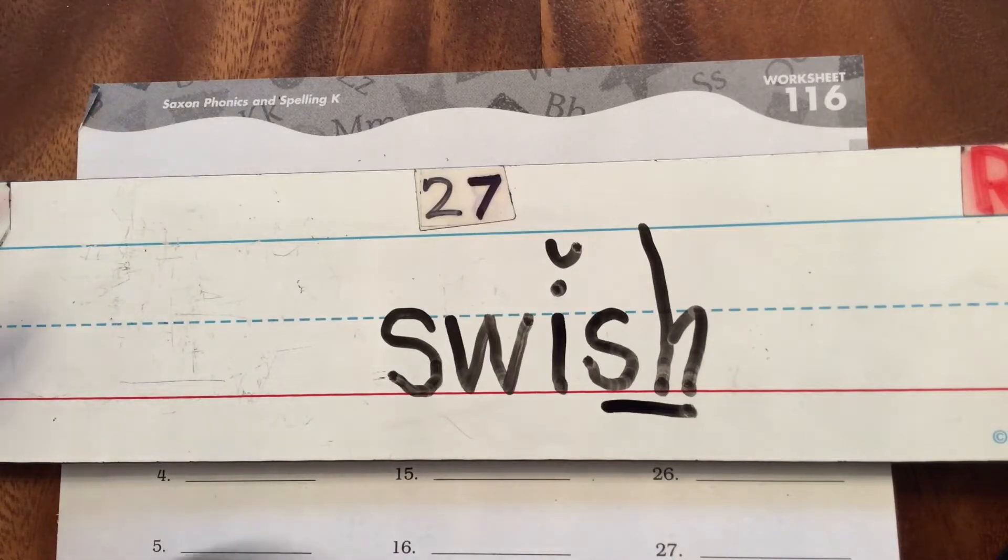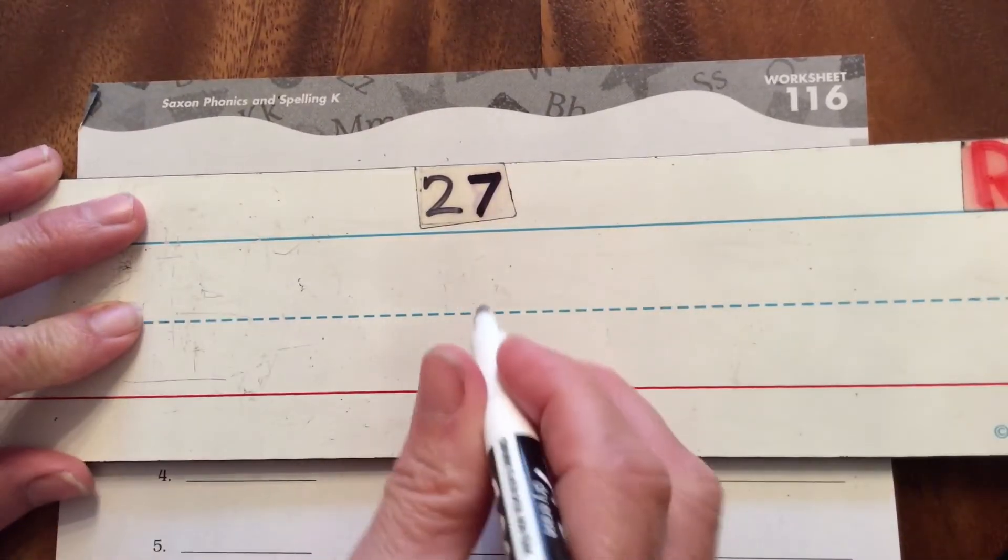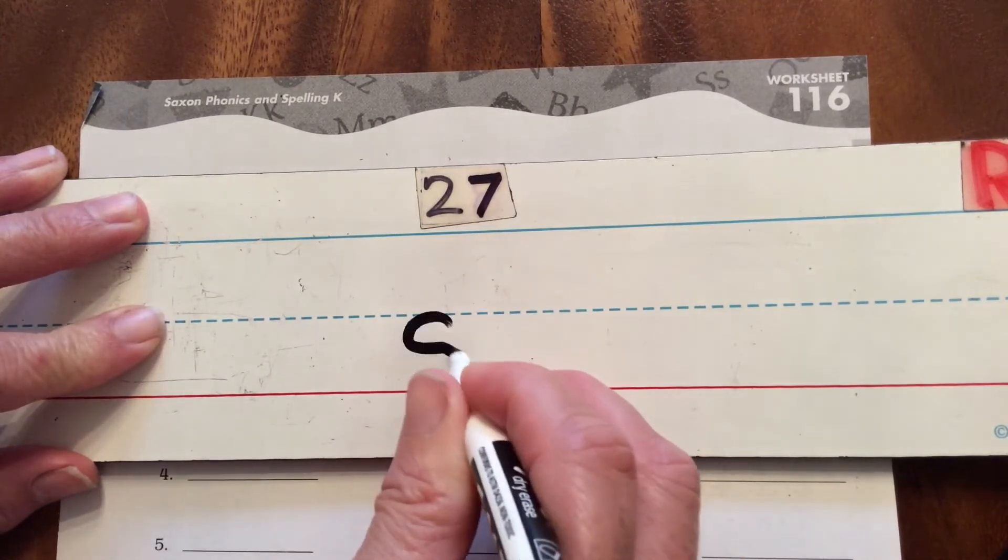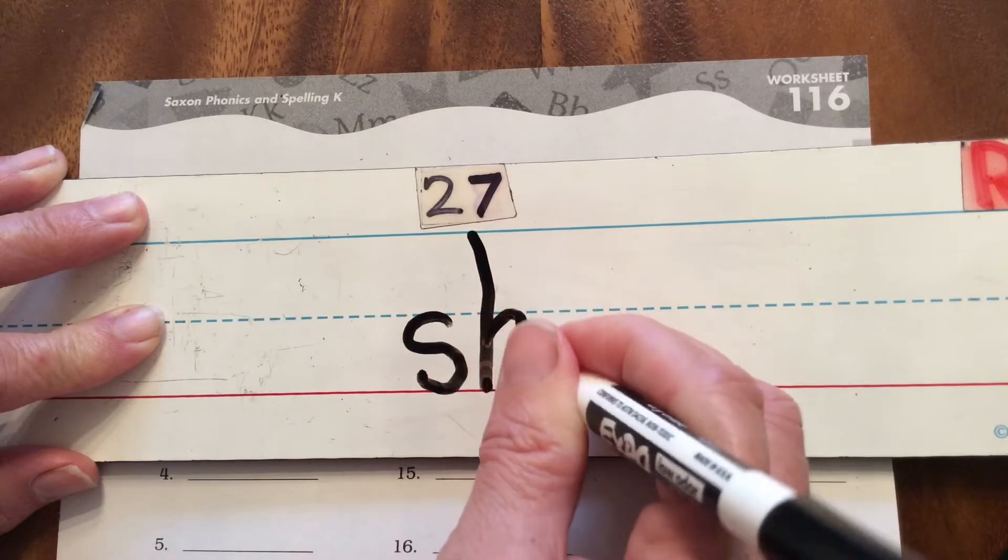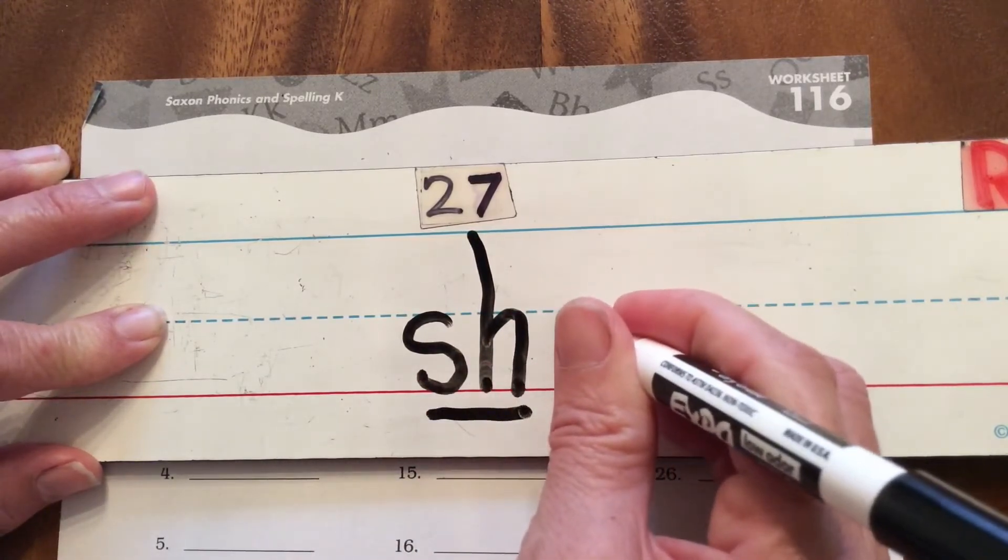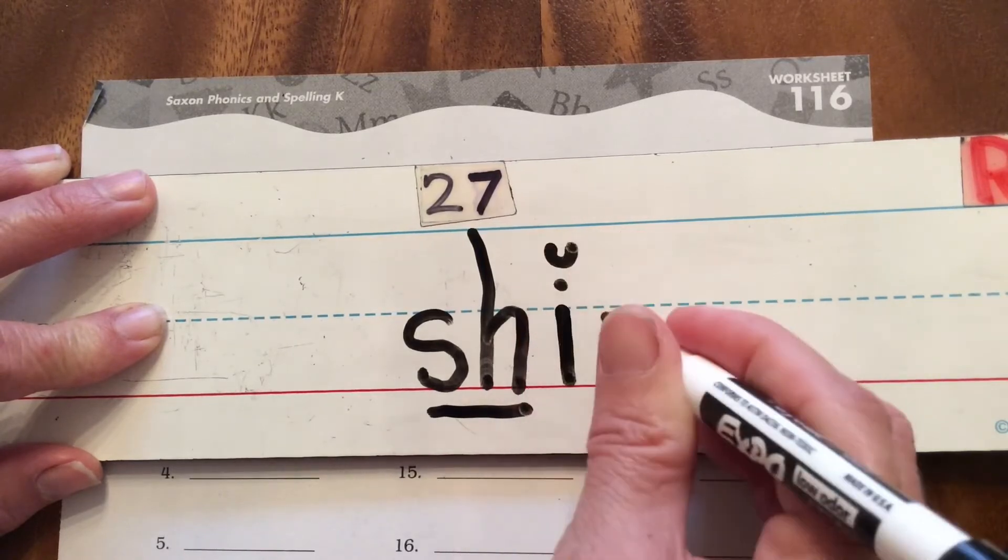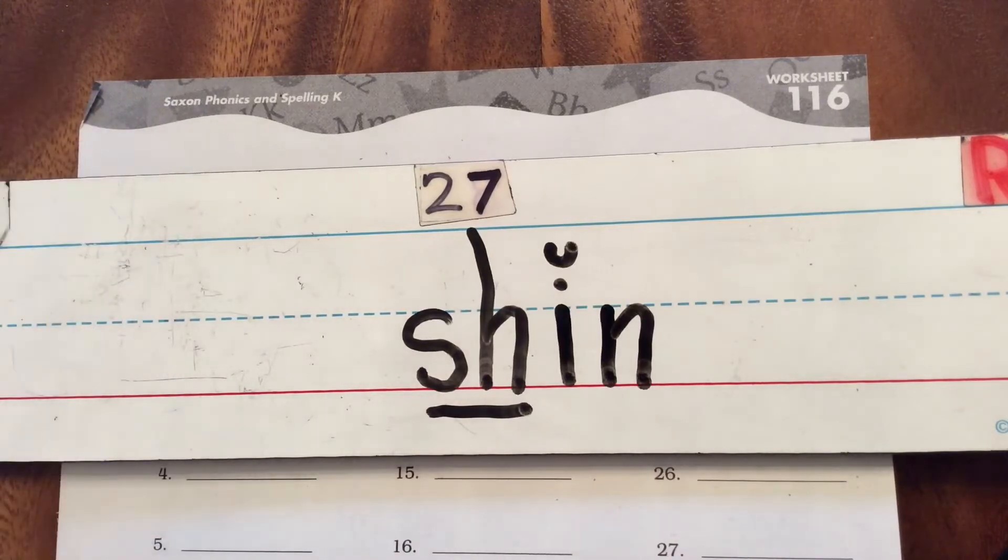All right, we're gonna try this one with our sh, put it back at the front. I've got sh and make my line underneath for my coding. Sh, N, it would be just like that, shin.